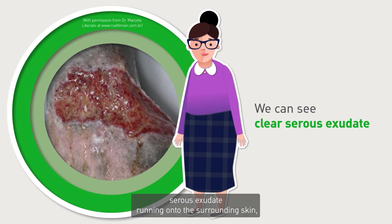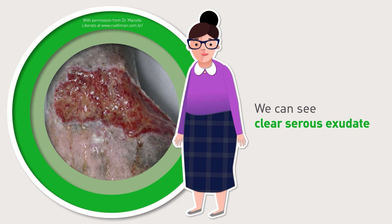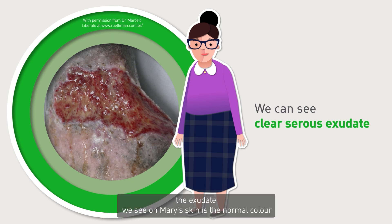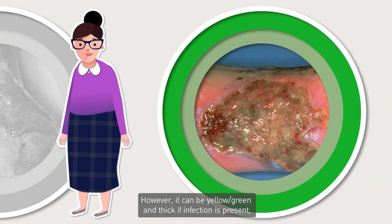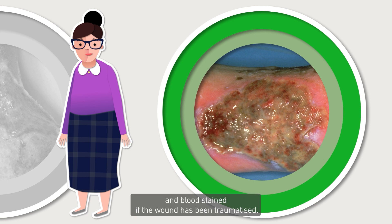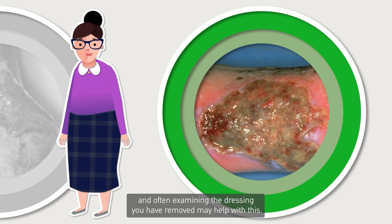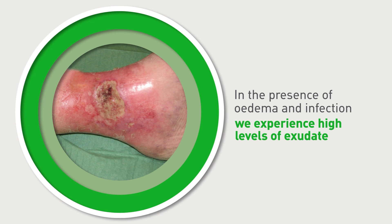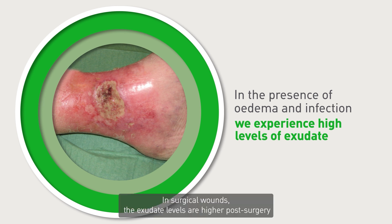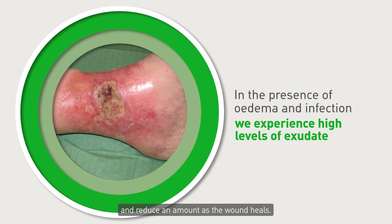What we can see is clear serous exudate running onto the surrounding skin. The exudate on Mary's skin is the normal colour and watery consistency. However, it can be yellow, green and thick in infection, and bloodstained if the wound has been traumatised. It is notoriously difficult to measure the amount of exudate, and examining the dressing you have removed may help. We know we get higher levels of exudate if oedema and infection are present, and in surgical wounds exudate levels are higher post-surgery, reducing as the wound heals.